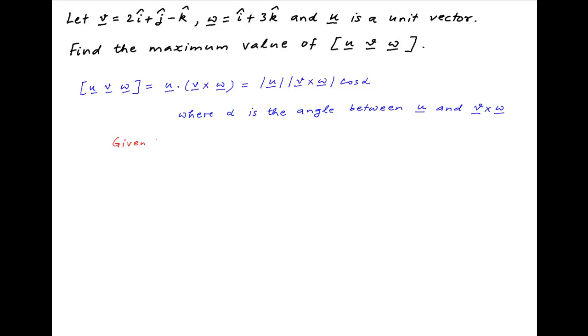Now, we are given that the absolute value of vector u is equal to 1, and the cross product of vectors v and w is equal to 2i plus j minus k cross i plus 3k.